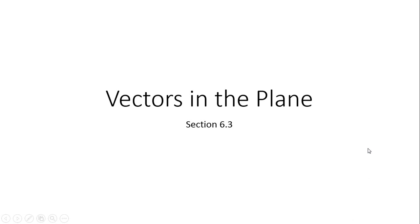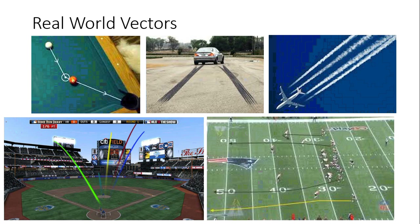Section 6.3 is on vectors in the plane. When you think about vectors, it's hard to visualize what they are because we only see where they've been. Here are some examples of vectors in the real world. When you're playing pool, you have to think in terms of vectors.